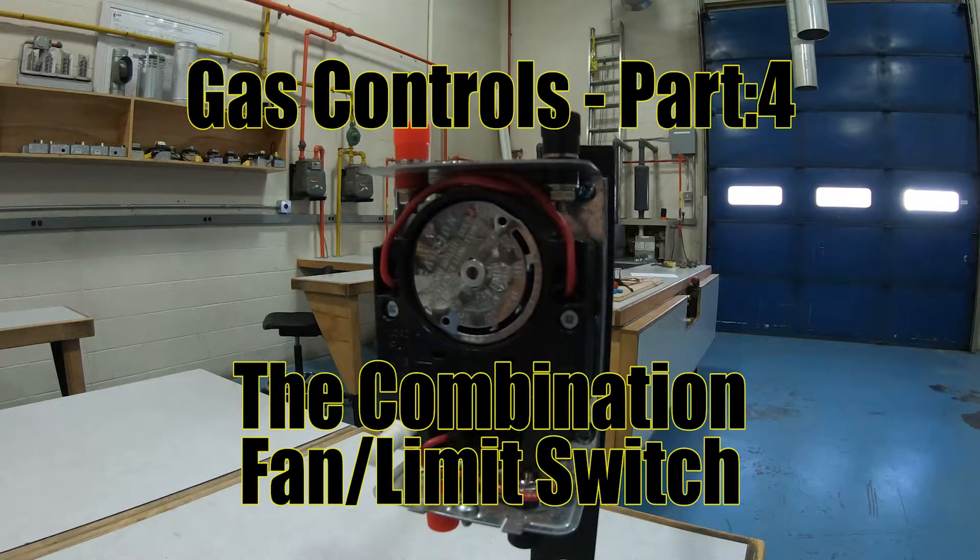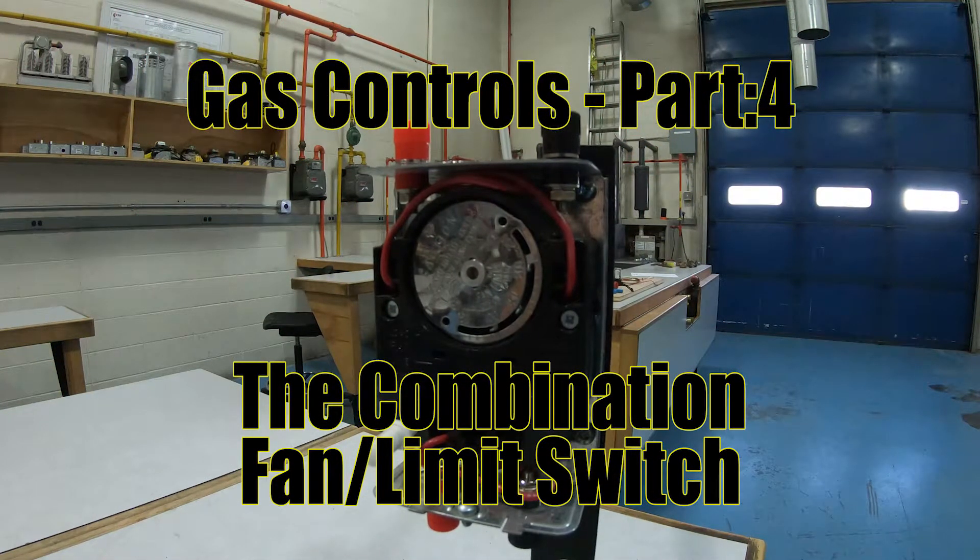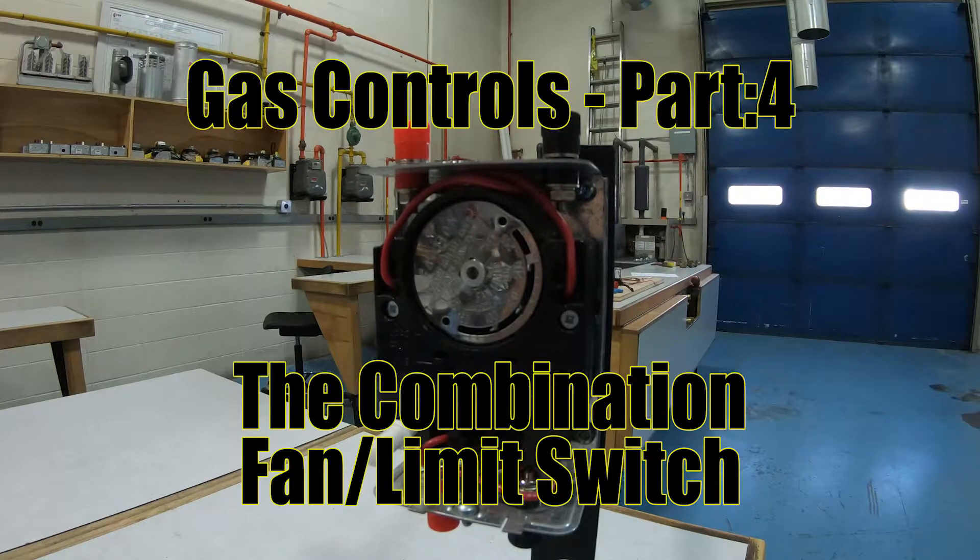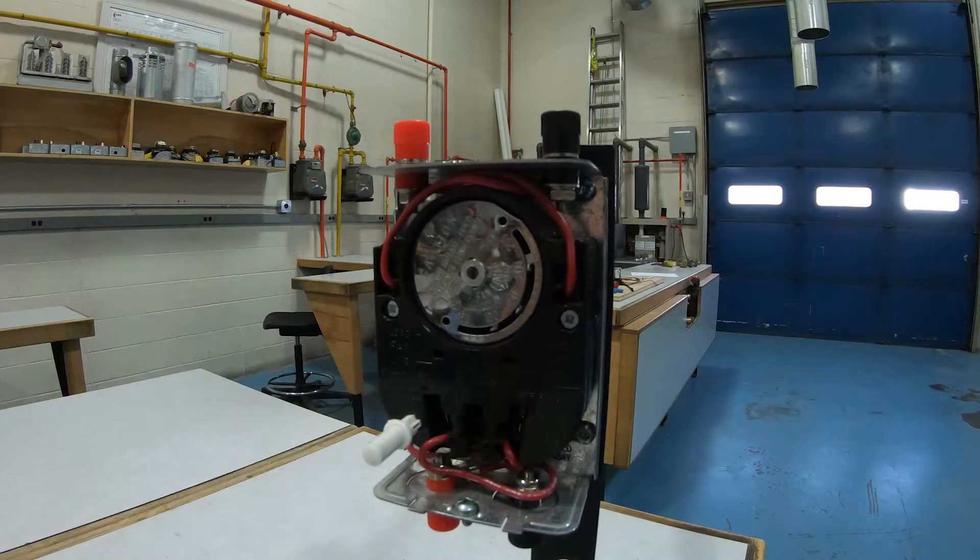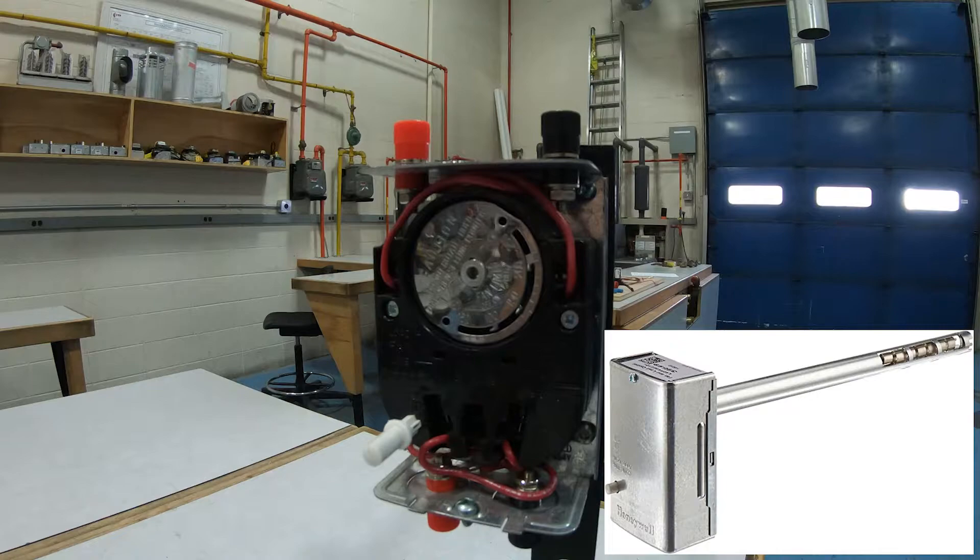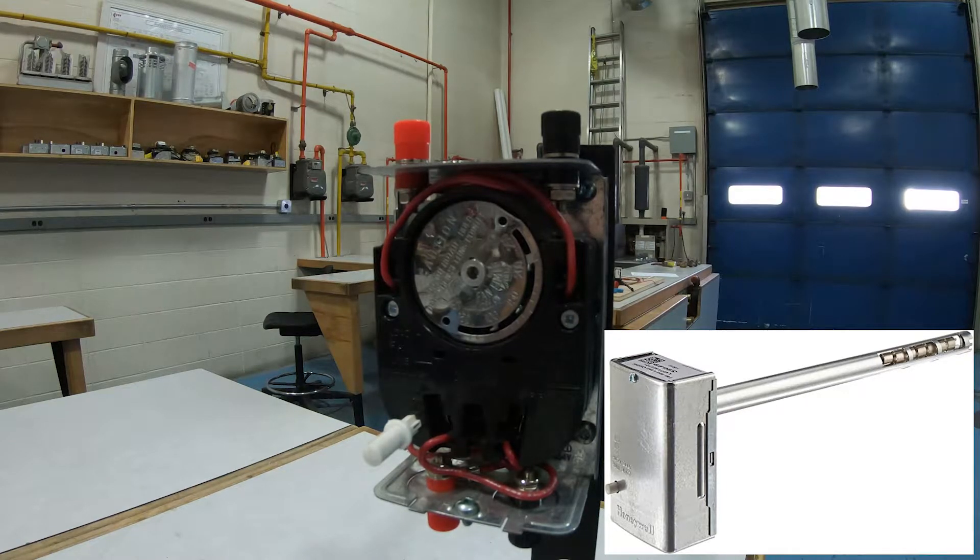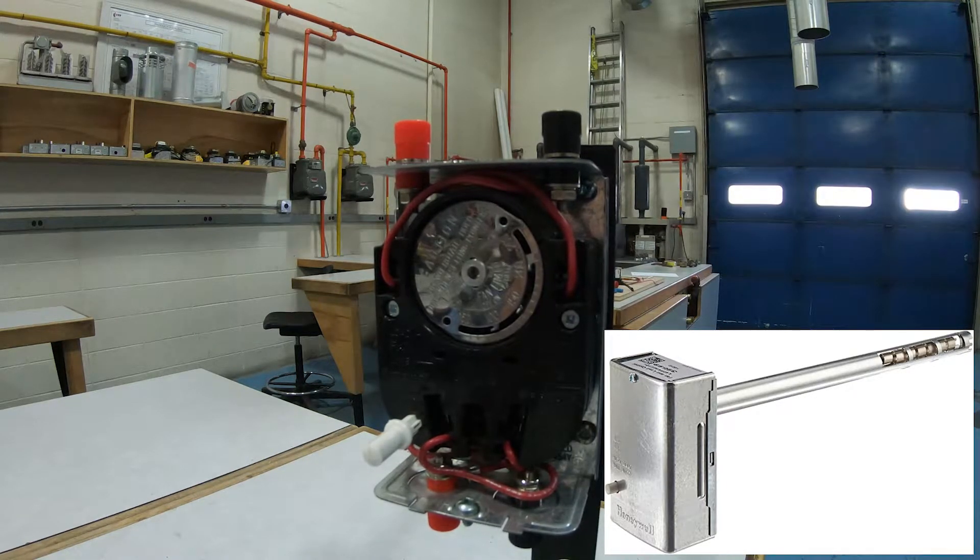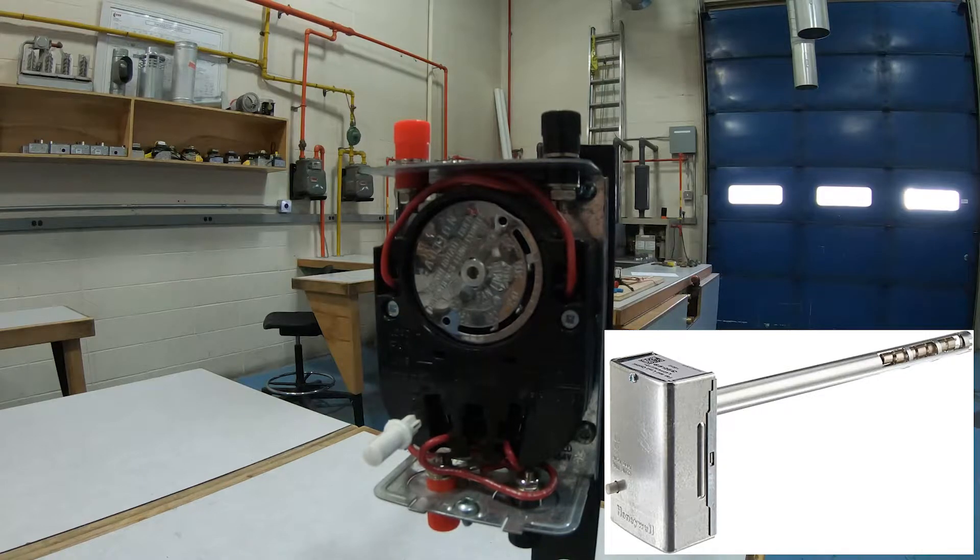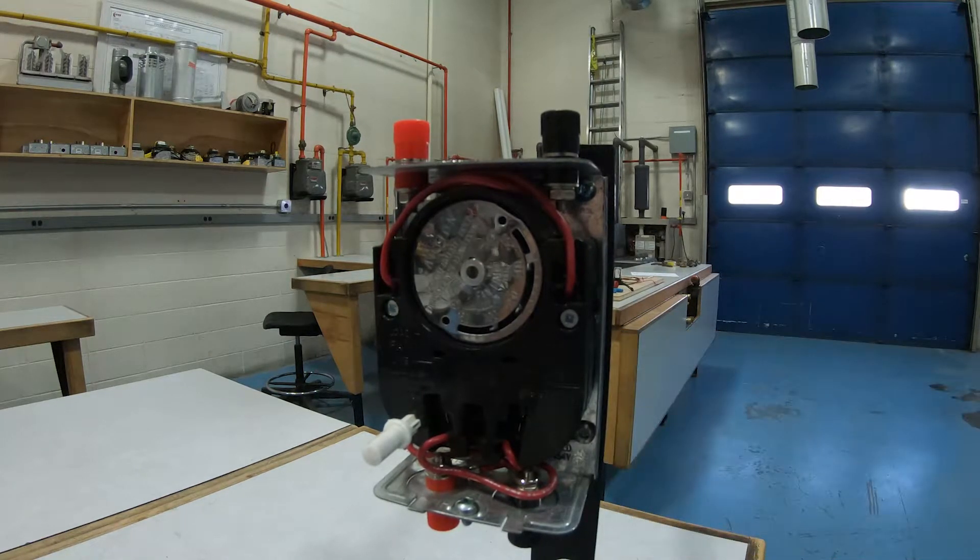Hello, Mathematic Plumber here, and welcome to my next video where we talk about the combination fan limit. This is an electrical device found in forced air furnaces that measures the air traveling through the furnace, not the exhaust, but the air that's being warmed up to be delivered to the house, and it will tell the furnace what it needs to do.